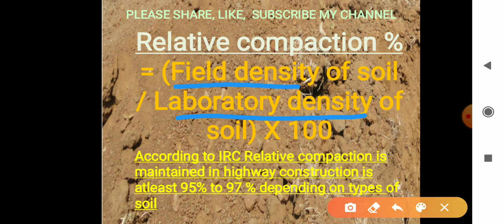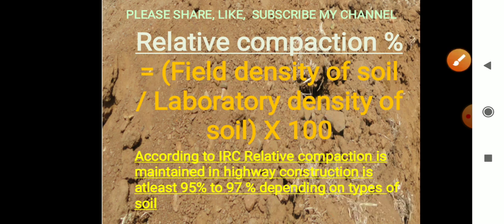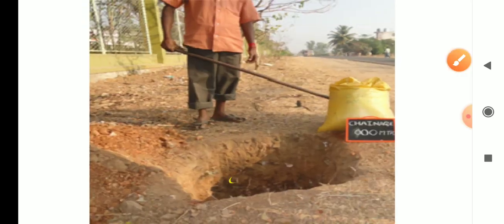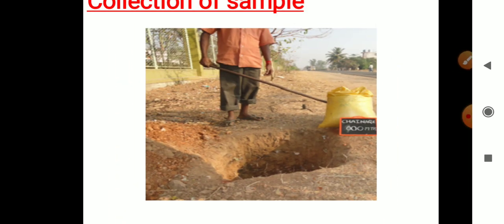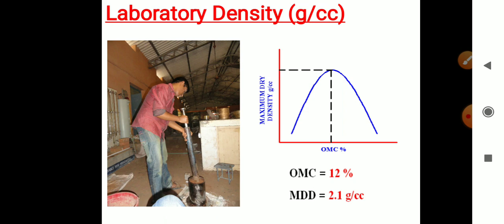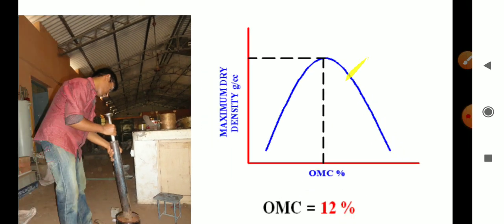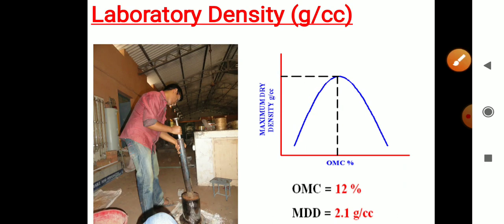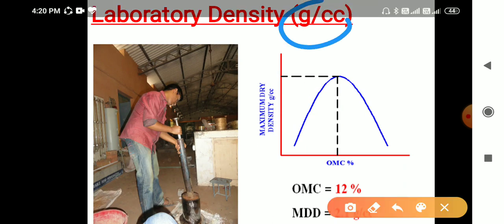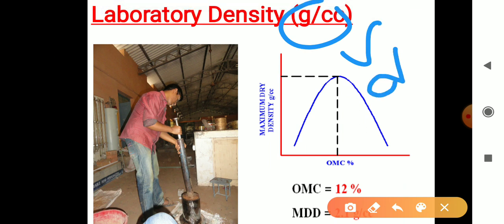We first collect the soil sample in a gunny bag, then find the laboratory density. Density is expressed as weight by volume, called gamma-d (dry density), in grams per centimeter cube. This is also called maximum dry density (MDD). We need to find both MDD and OMC.